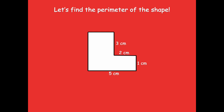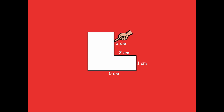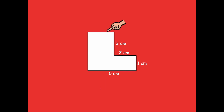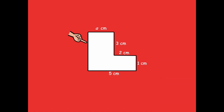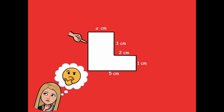Let's find the perimeter of this shape. Say the side length as I point to it. Three centimeters, two centimeters, one centimeter, five centimeters. This one isn't labeled, so let's label it as side A centimeters. This other one isn't labeled either — that's an unknown side length too. So we're going to label that as B centimeters.